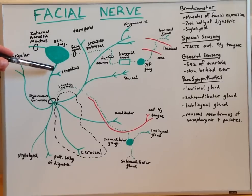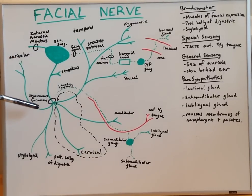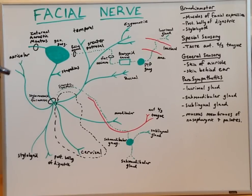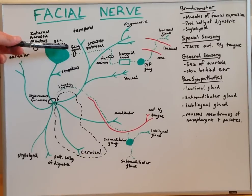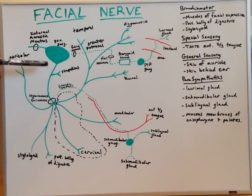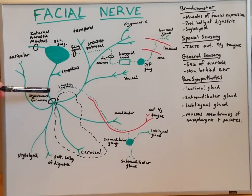The facial nerve fibers continue south to the stylomastoid foramen, but before reaching that foramen, it gives off three branches: one to the greater petrosal nerve, one to the stapedius muscle, and one to the chorda tympani.